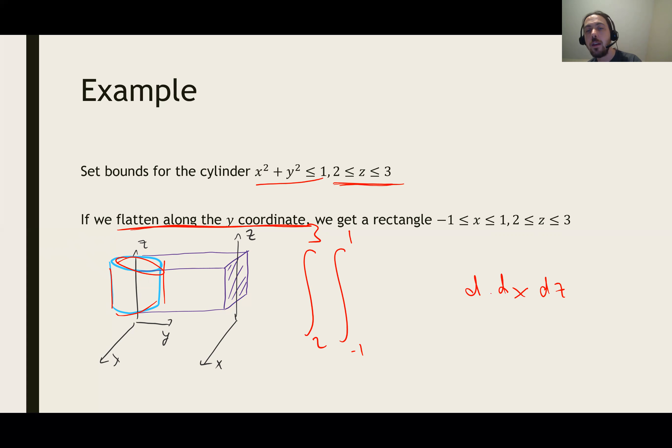And then inside those, we have to figure out what are the biggest and smallest that y could possibly be. They depend on potentially x and z. And to do that, we go back here and we say, actually, well, y squared is less than or equal to 1 minus x squared. That means that y is between minus the square root of that and plus the square root of that. Like so. So that sets up the bounds for this triple integral.